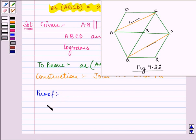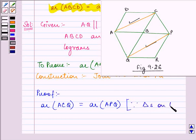Now we can say that area of triangle ACQ is equal to area of triangle APQ. Because triangles on the same base have equal area.